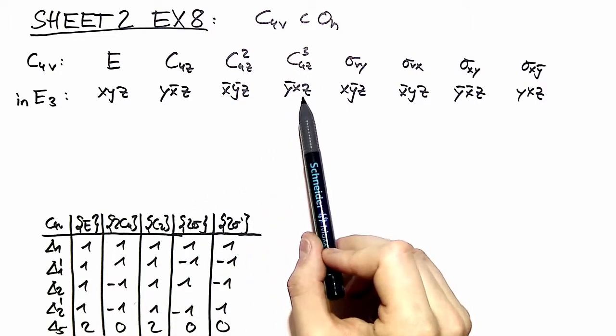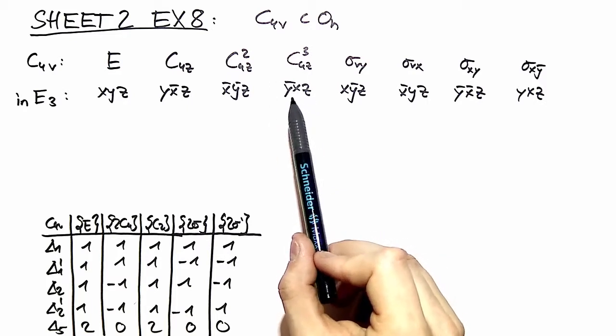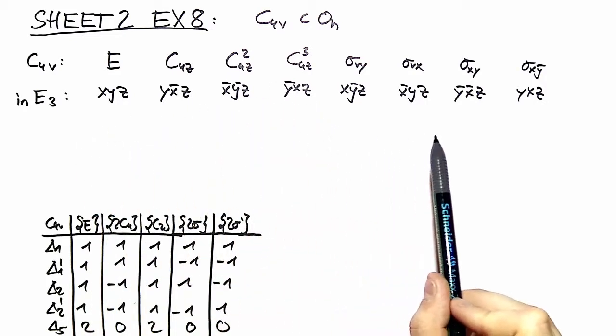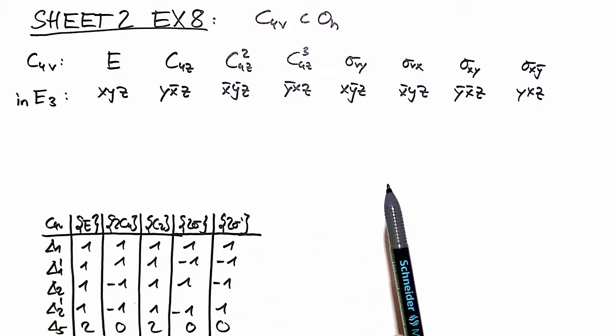From this, the three-dimensional representation immediately follows, and when you construct that three-dimensional representation and look at this character table, you already have the irreducible components.